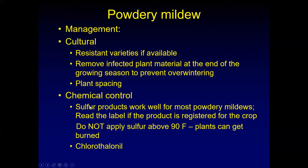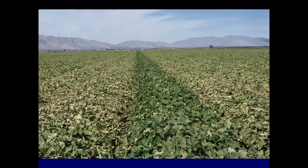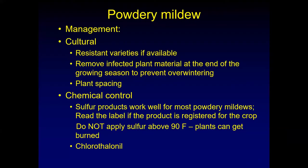For chemical control, sulfur products work very well for most powdery mildews. Read the label to confirm the product is registered for the crop you want to use it on. Do not apply sulfur above 90 degrees Fahrenheit or it will damage your plants — here you can see melons that were sprayed in high heat with sulfur, with leaves fried to a crisp. Apply sulfur very early in the morning with two to three hours for leaves to dry before reaching 90°F, or wait until late evening after it has cooled below 90°F. Other products include chlorothalonil or kaolin (kali green) as another option.